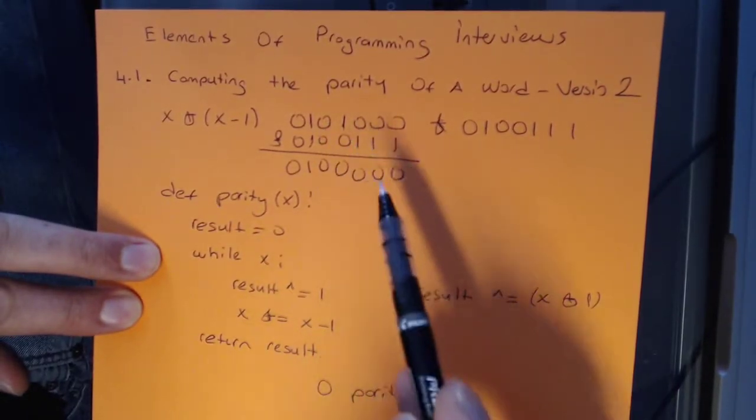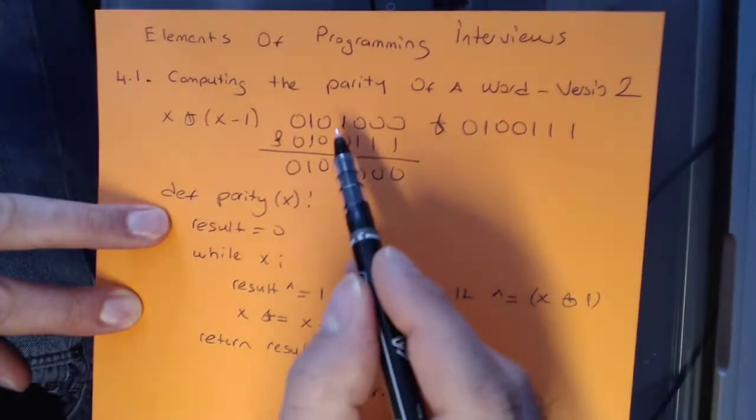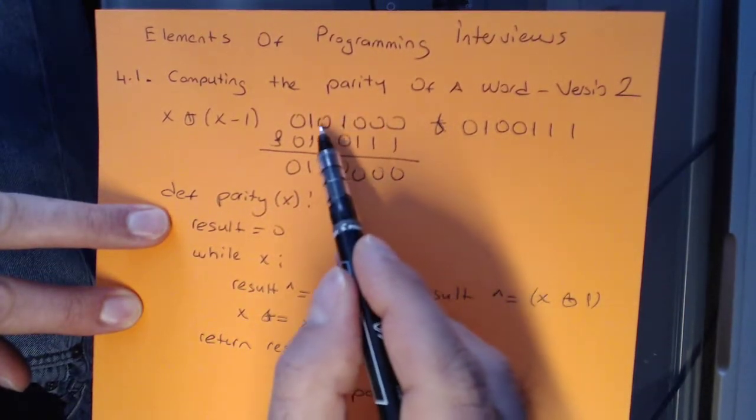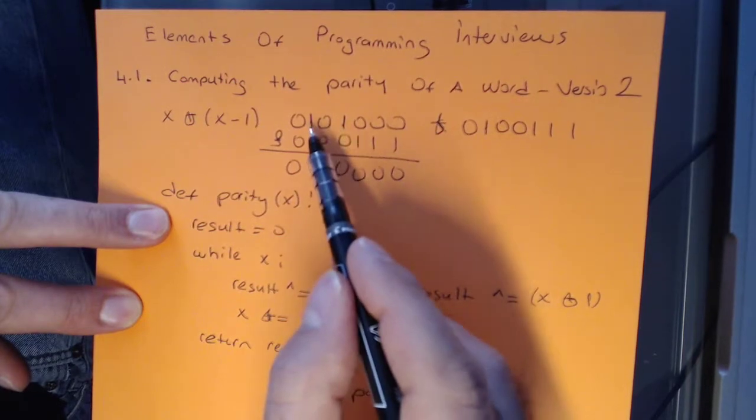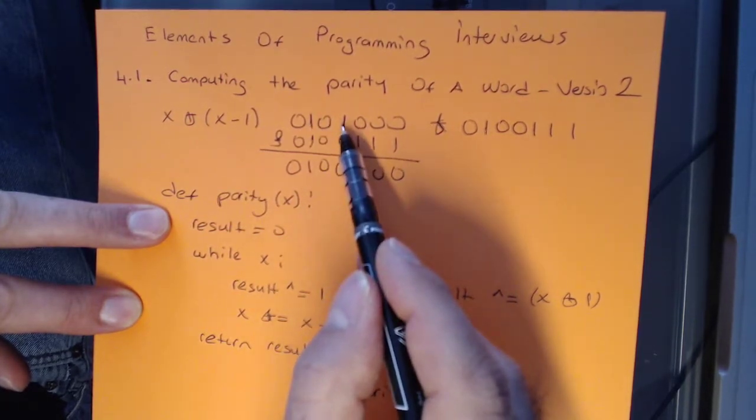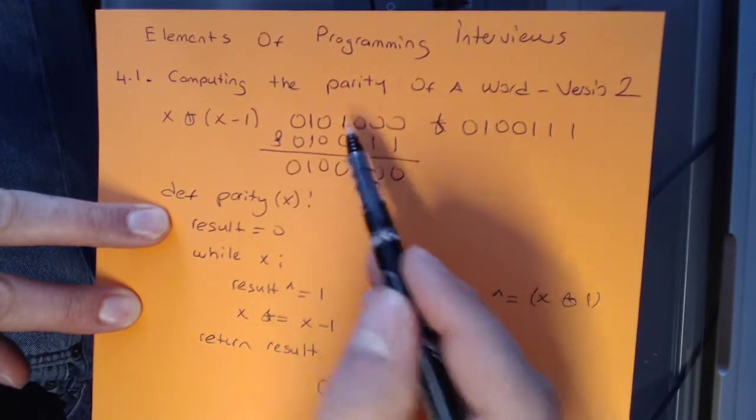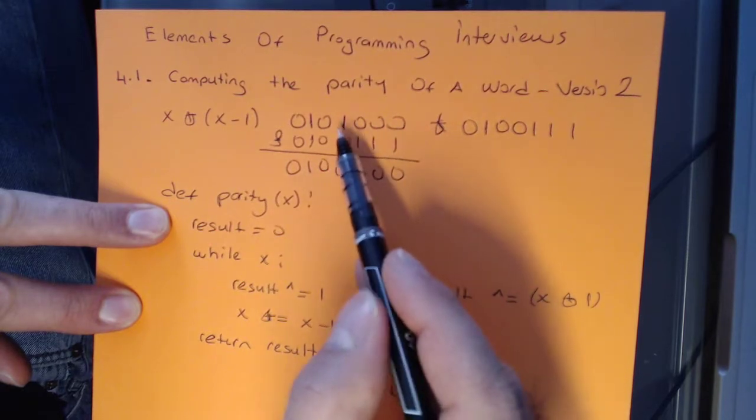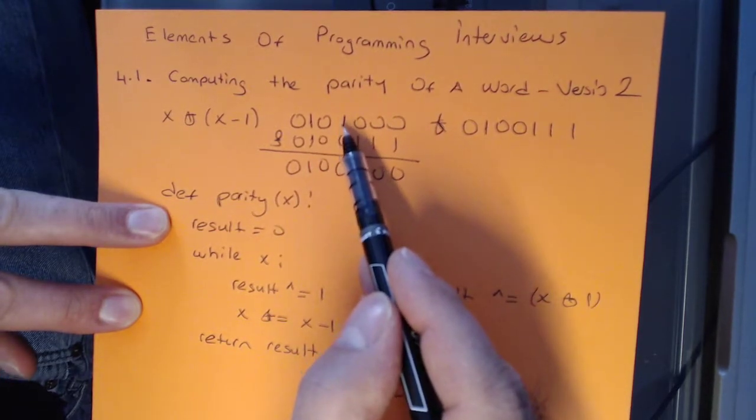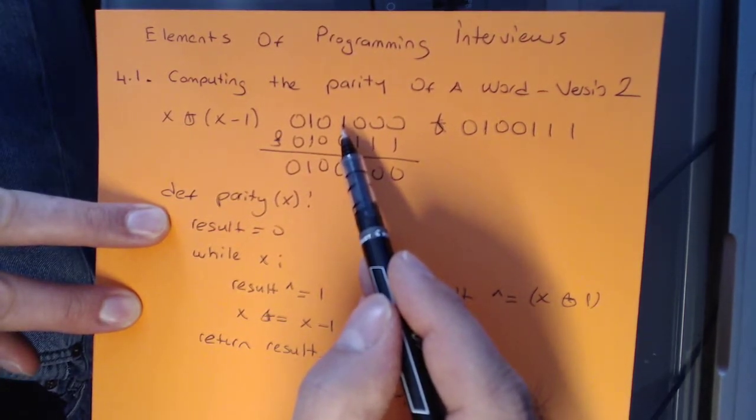So the previous solution was O(n) where n is number of bits. This particular solution is O(number of set bits) in a given word. That means in this case it is 2, so it is O(2). It's still linear compared to number of bits, but it's linear to number of set bits, so it's going to be performing better compared to the first solution.